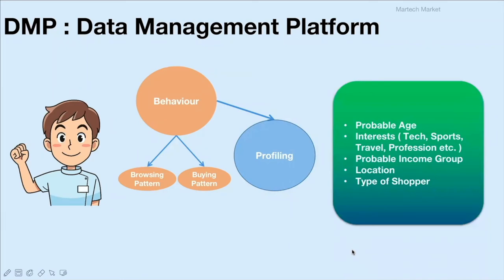The major objective of a DMP platform is to understand the buying and browsing behavior of internet users and profile each user into a category or bucket. For example, if a user logs into a social media platform they may be bucketed as age 15 to 45. If the same user visits an investment-based site, they're bucketed as age 25 to 40. If they buy tech-related products they're categorized as a tech geek, if they buy premium products they're categorized as high income group, and if they buy only using coupon codes they're categorized as an offer seeker.